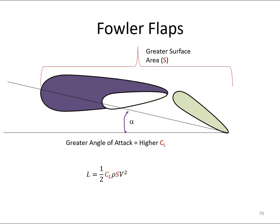When retracted, the Fowler flap is hidden within the contours of the wing, leaving its track mechanism protruding from the wing trailing edge.